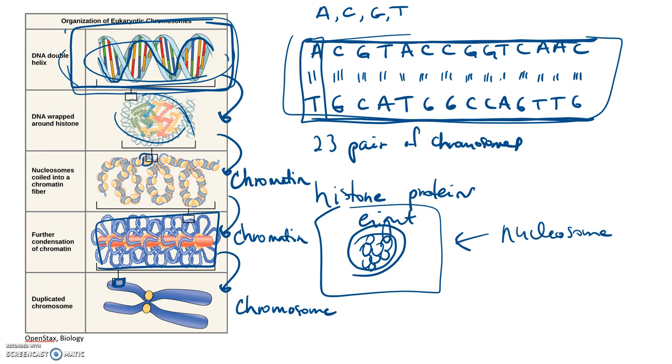In the cell, the only time that DNA is going to exist in this state, in the chromosome state, is during cell division. And there's two types of cell division that we're going to talk about. The first is mitosis, and the second is meiosis.